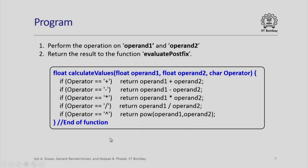Next, we look at the calculate_value function, which performs the operation on operand 1 and operand 2 and returns the result to evaluate_postfix. It takes two operands and the operator as parameters. It is extremely simple — if the operator is plus, minus, star, slash, or raised-to, we perform the necessary operation and return the result.